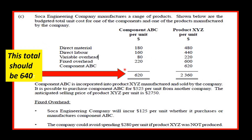They want to know whether to buy the component outside or make it, and then whether to accept a special order. Component ABC is incorporated into XYZ, manufactured and sold by the company. It is possible to purchase component ABC for $5.25 per unit from another company.